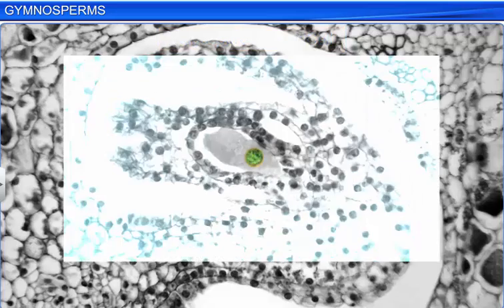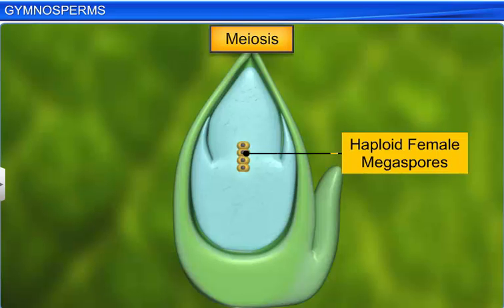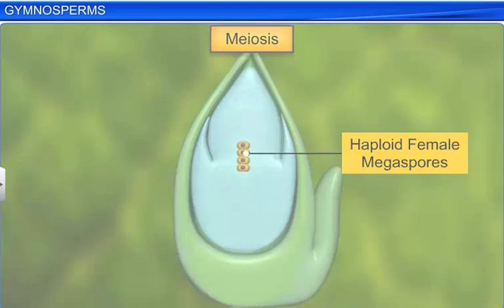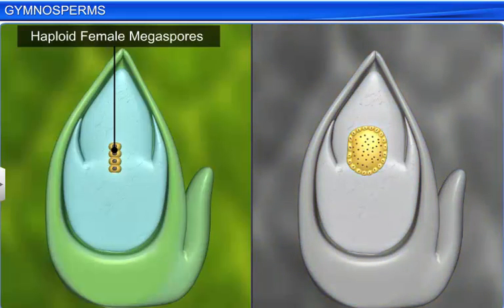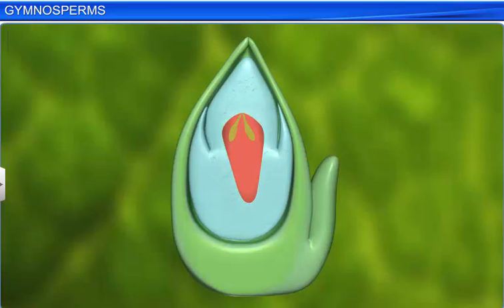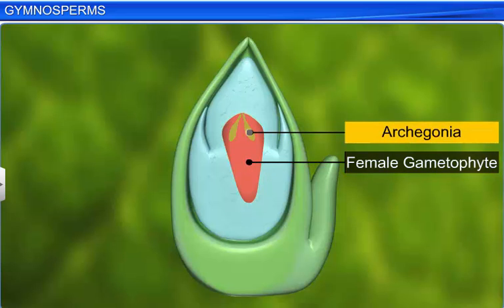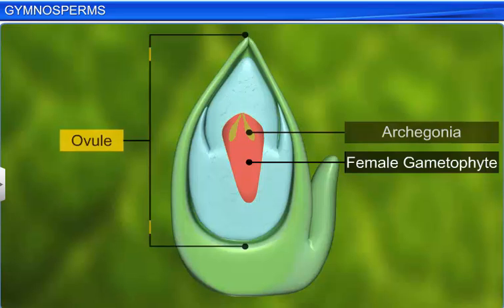The megaspore mother cell undergoes meiosis to give rise to four haploid megaspores. One of these spores develops into a multicellular female gametophyte. The female gametophyte further bears two or three female sex organs called archegonia, which develop inside the ovule.